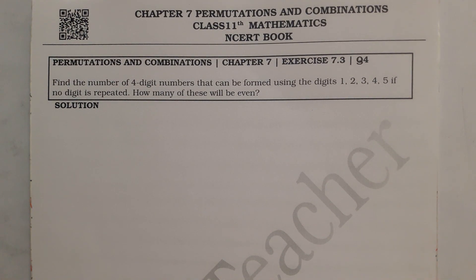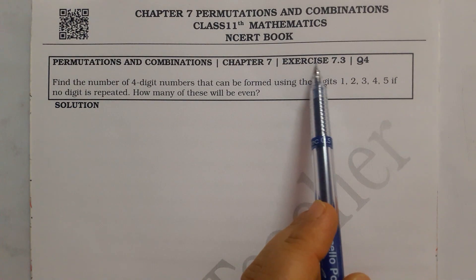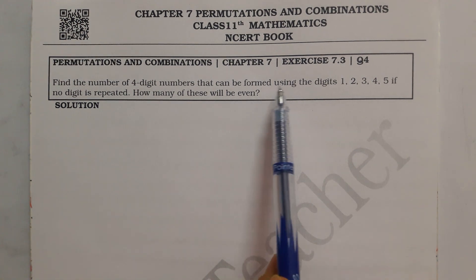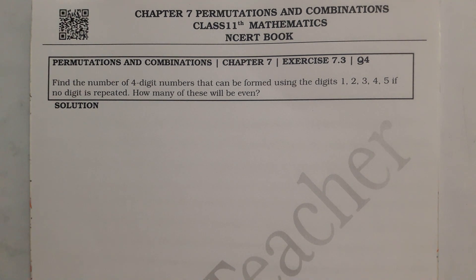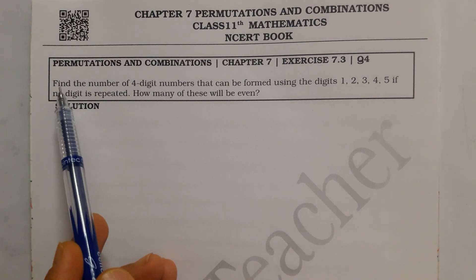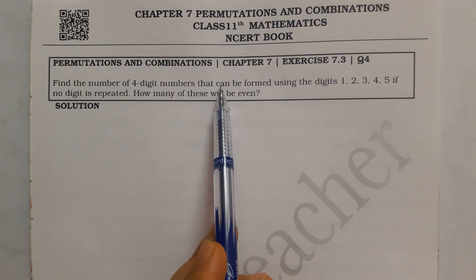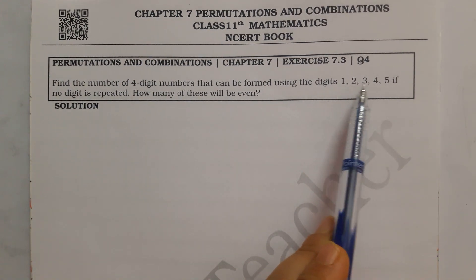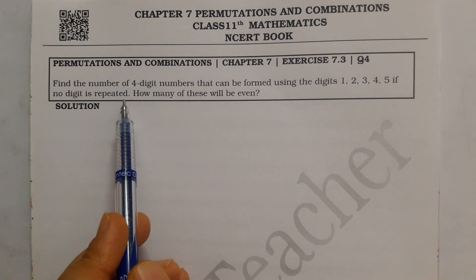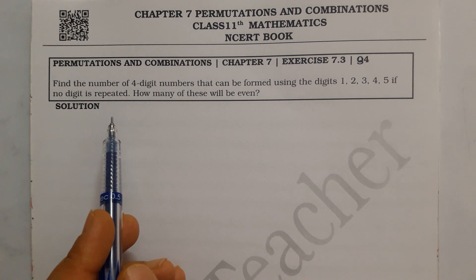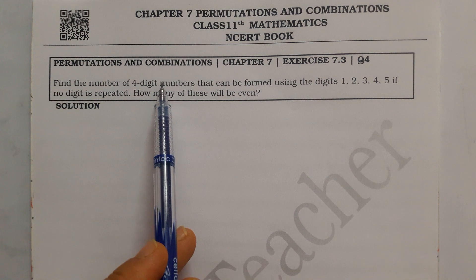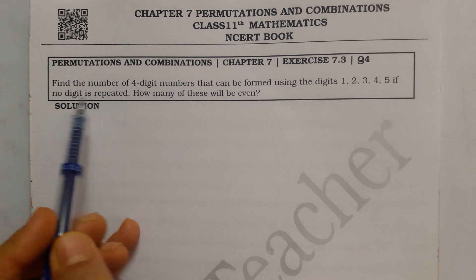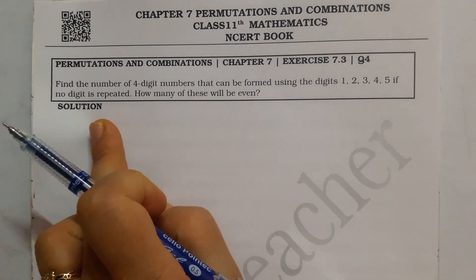Hello students, welcome to my channel. We are starting question 4 in this video. The question is: find the number of 4-digit numbers that can be formed using the digits 1, 2, 3, 4, 5, if no digit is repeated. This is a simple question because there is no special condition — you have 5 digits and you have to make a 4-digit number with no repetition.